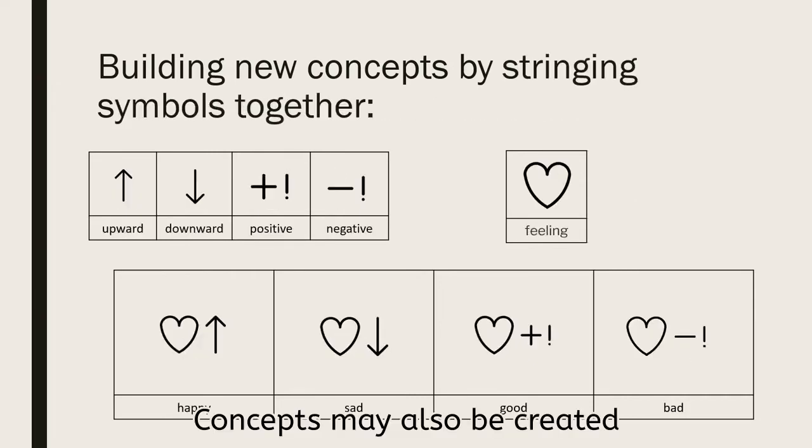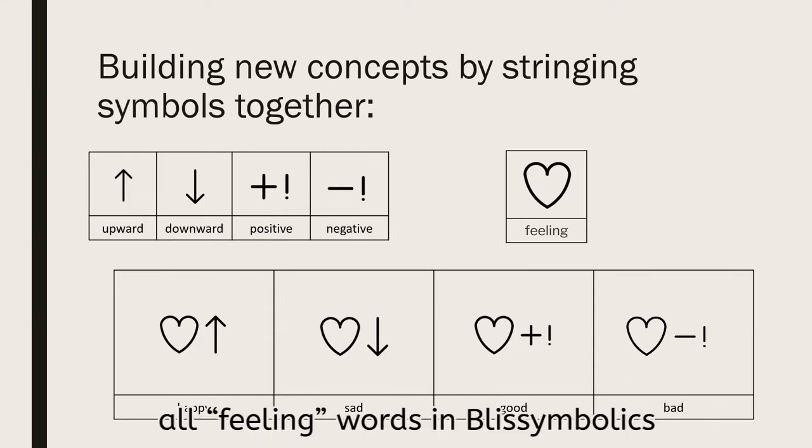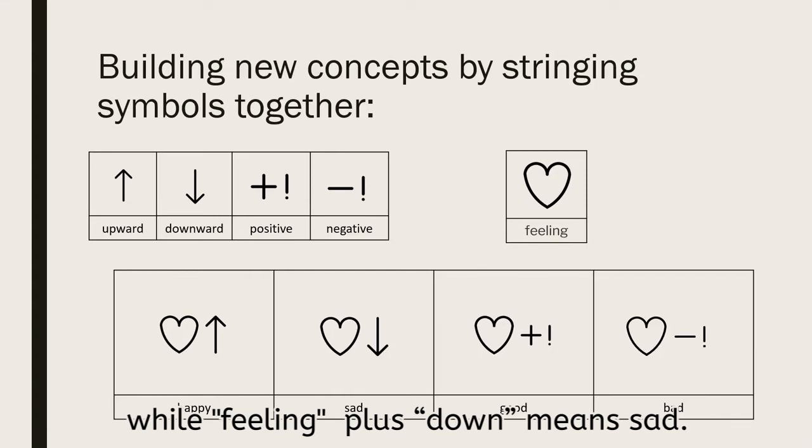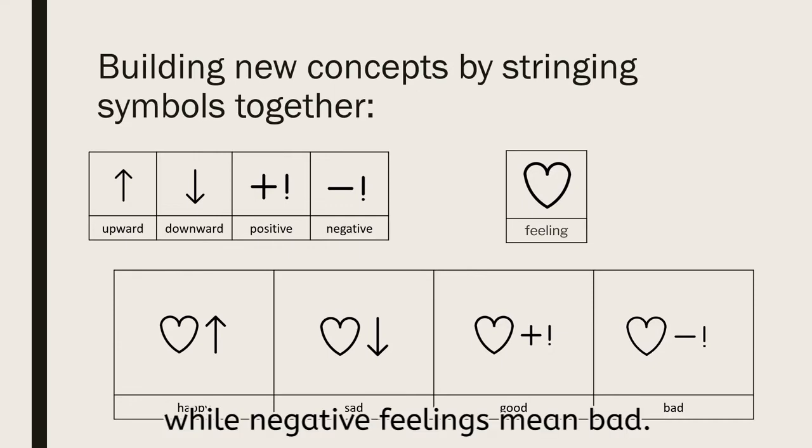Concepts may also be created by appending one basic symbol to another. For example, all feeling words in Bliss symbolics have the heart shape at their core. They are then qualified by appending other shapes to represent specific feelings. Feeling plus up means happy, while feeling plus down means sad. Positive feelings mean good, while negative feelings mean bad.